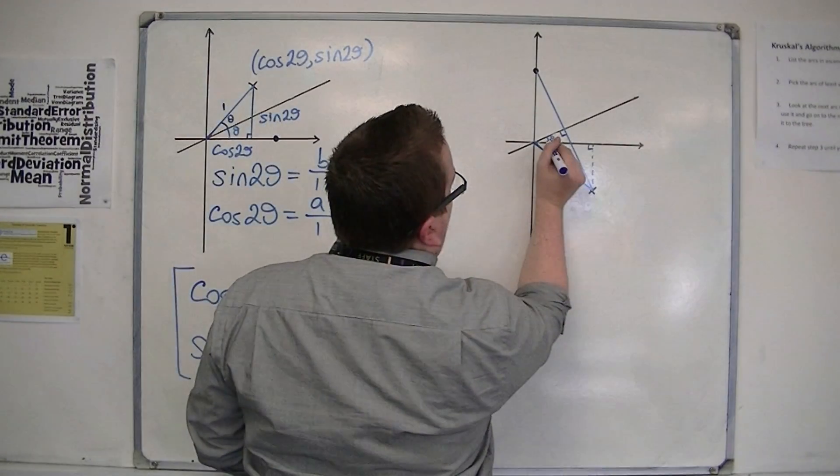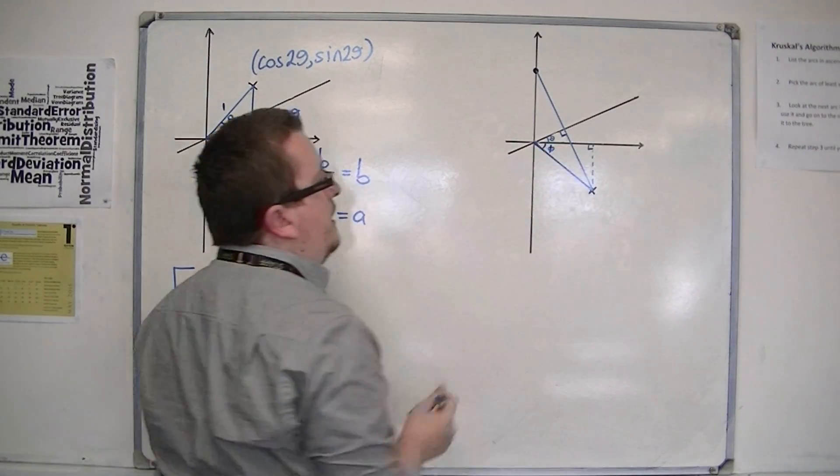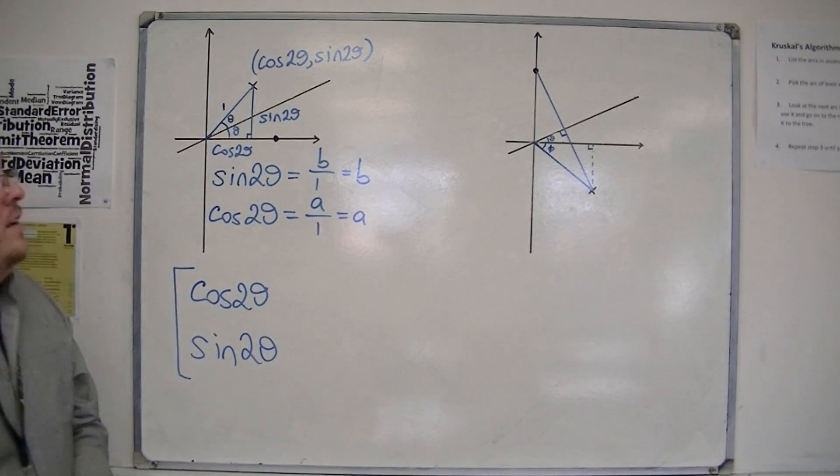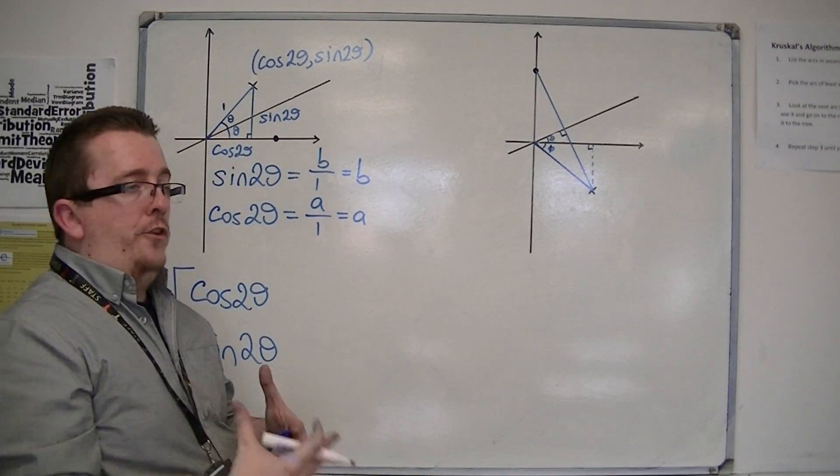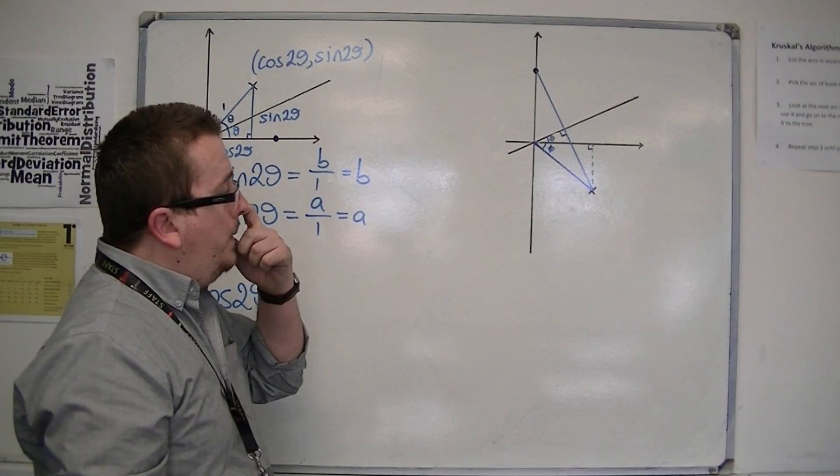And if I call this angle phi, so another angle phi, then I can start to determine the coordinates of this point using some angle tricks.